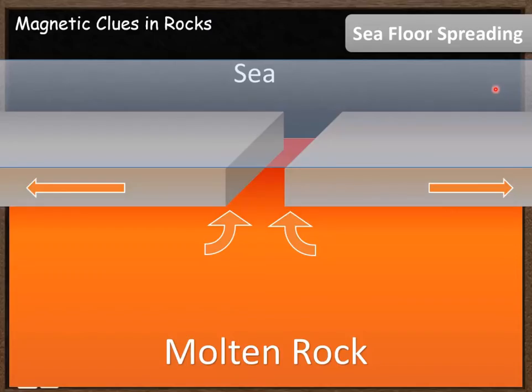To understand that process we first must look at how rocks can exhibit magnetism in the first place. And to do that we're going to look at how rocks are produced.